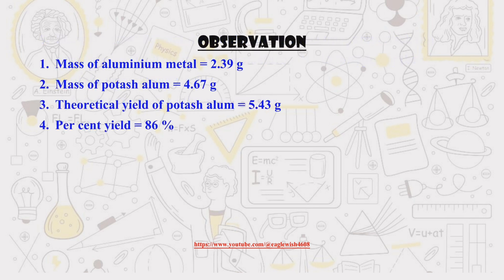At the end of our experiment, we noticed that the total yield of potash alum is 4.67 grams from 2.39 grams of aluminum scraps.